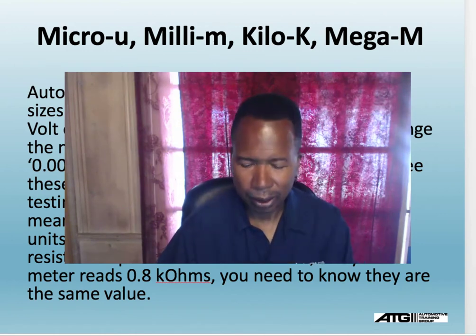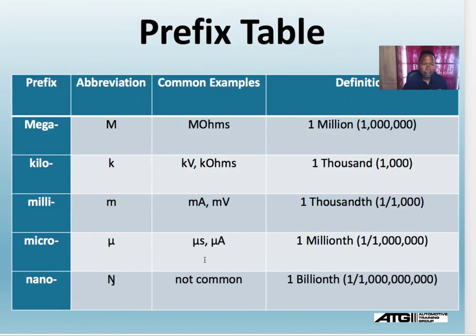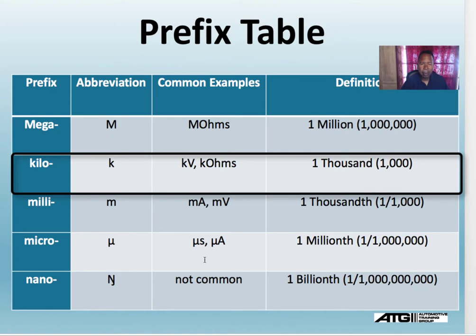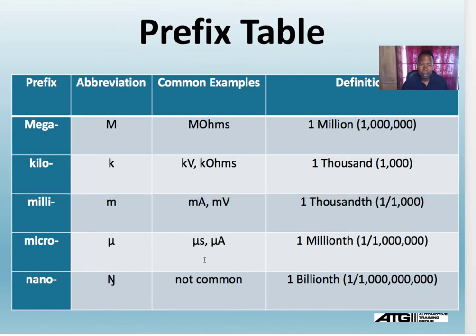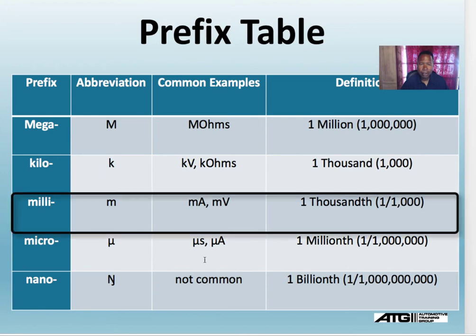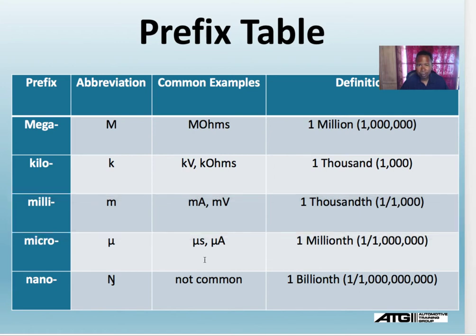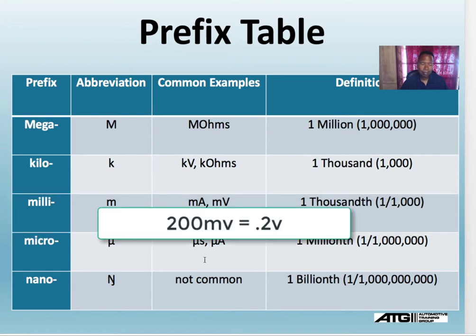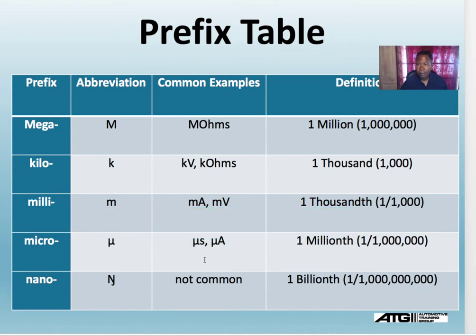Now let's look at the next slide. Mega and million, kilo is thousands. If I got 200 millivolts, that's 200 millivolts, smaller than a volt. Micro and milli means smaller, so micro means one millionth of something, and nano is not common but is one billionth of something of a unit.